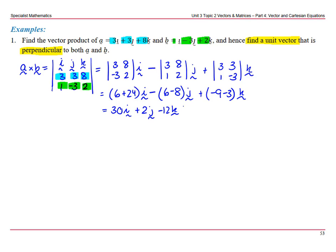So a cross b finds a vector perpendicular to a cross b. We need to find the unit vector. This here is a vector perpendicular to a and b, but we want the unit vector.